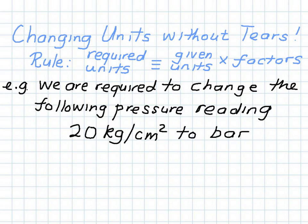Using this example, we are going to write bar on the left. To make matters simpler, we will first do a conversion to Newton per meter squared, and then from Newton per meter squared we will head on to bar, which is essentially not an SI unit but is usually the reading found on pressure gauges. So let's get on with our conversion.